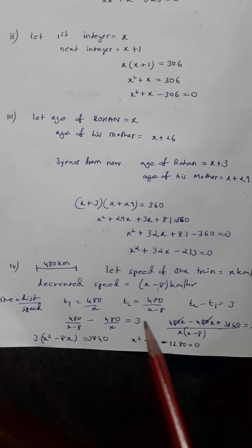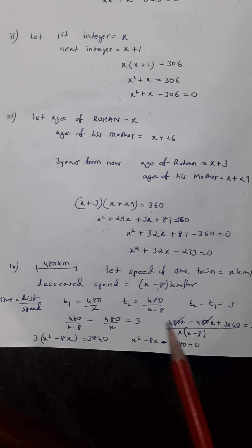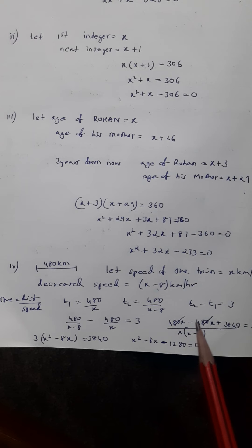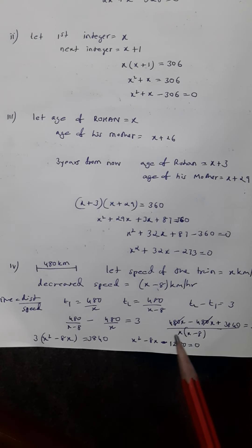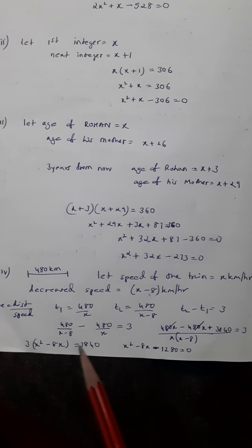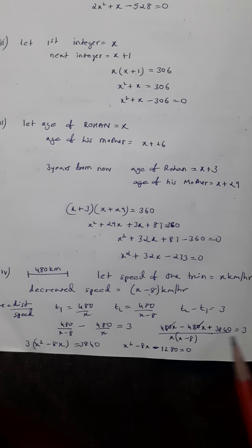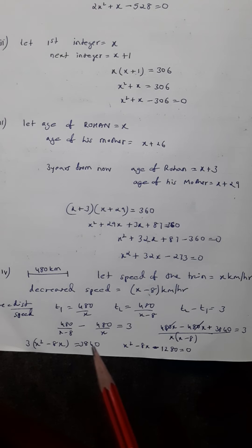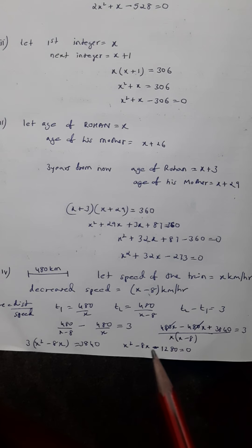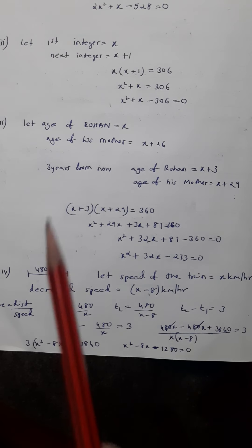So 480 over x minus 8 minus 480 over x equals 3. Taking LCM of x times x minus 8: we get 480x minus 480 times x minus 8, all over x times x minus 8, equals 3. Opening the bracket: 480x minus 480x plus 3840 gives 3840 over x squared minus 8x equals 3. Cross multiplying: x squared minus 8x equals 1280, so the quadratic equation is x squared minus 8x minus 1280 equals zero.